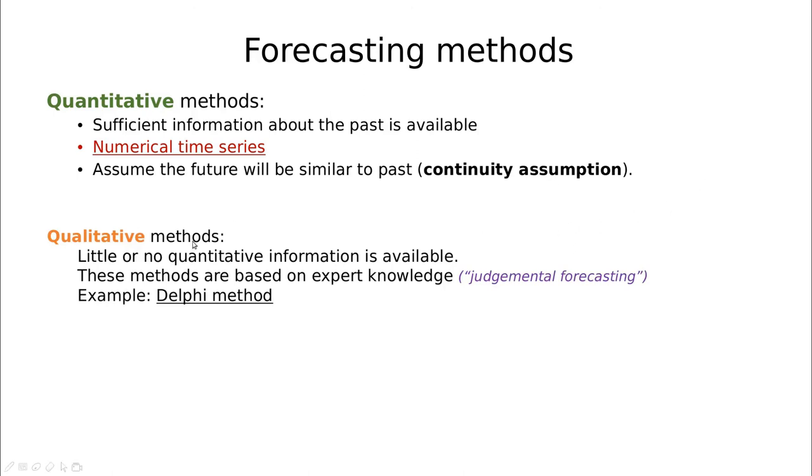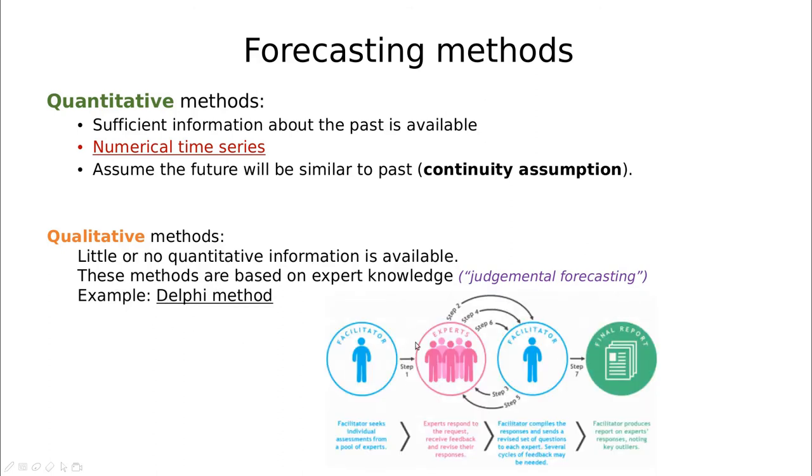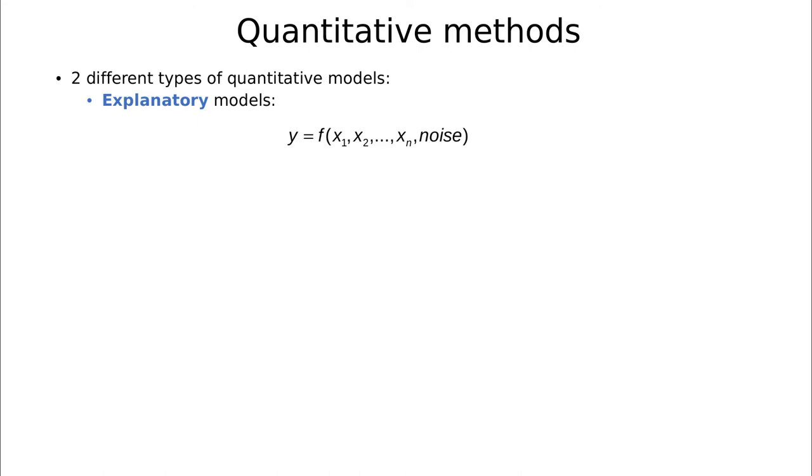On the other hand we have qualitative methods. In qualitative methods we have little enough quantity information available and we want to rely on expert knowledge. This is traditionally called judgmental forecasting and there is a very famous method called the Delphi method. It's very simple, so put some experts in a room and then make them do their own predictions and then the facilitator is going to mix them up and then go back to the experts and say okay this is what all the experts have said. Then you can somehow re-qualify your previous forecast and make a guess again and you repeat this loop over and over again until you have some consensus.